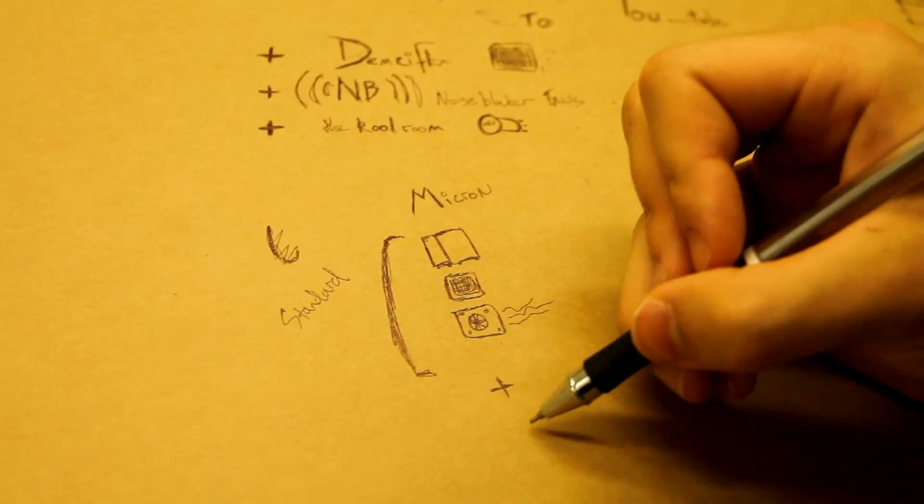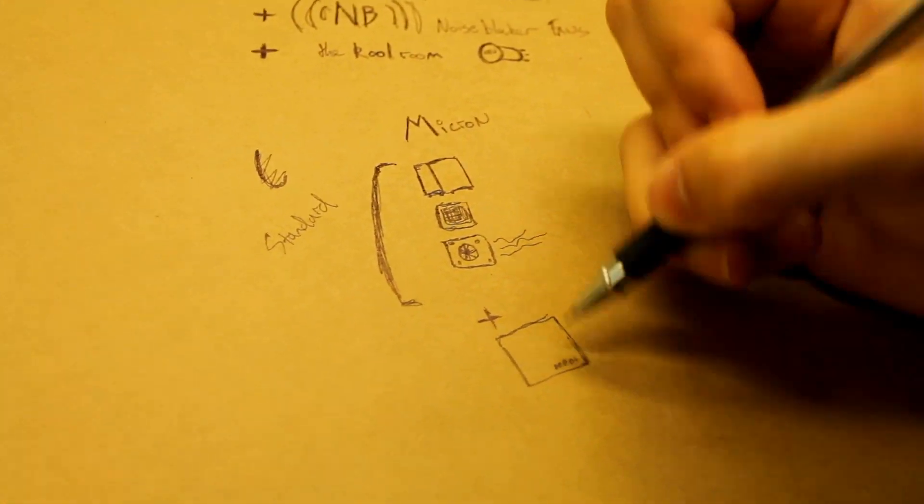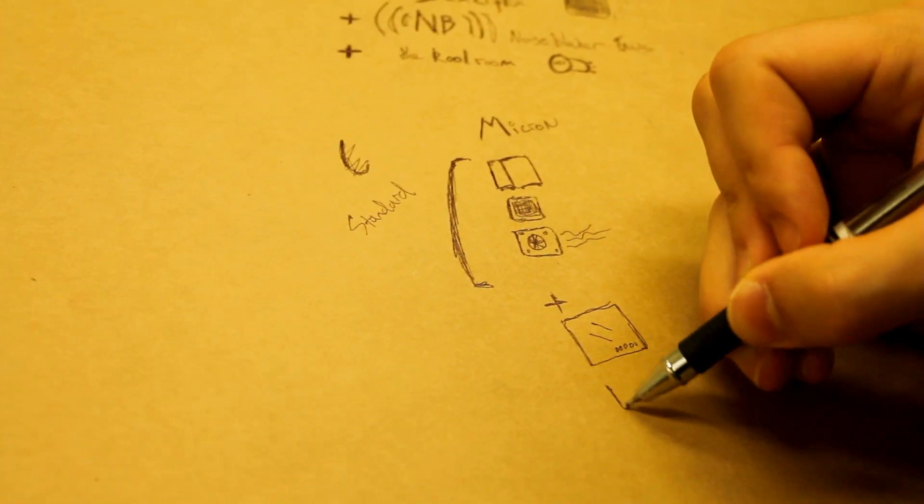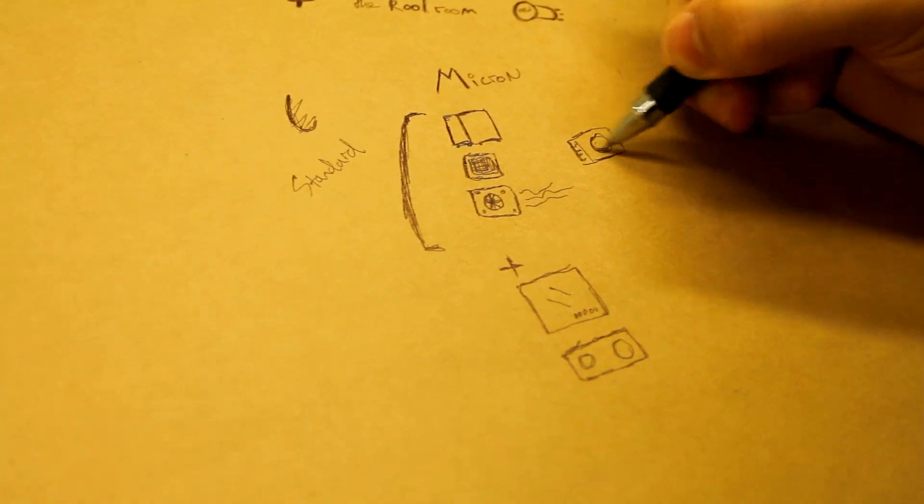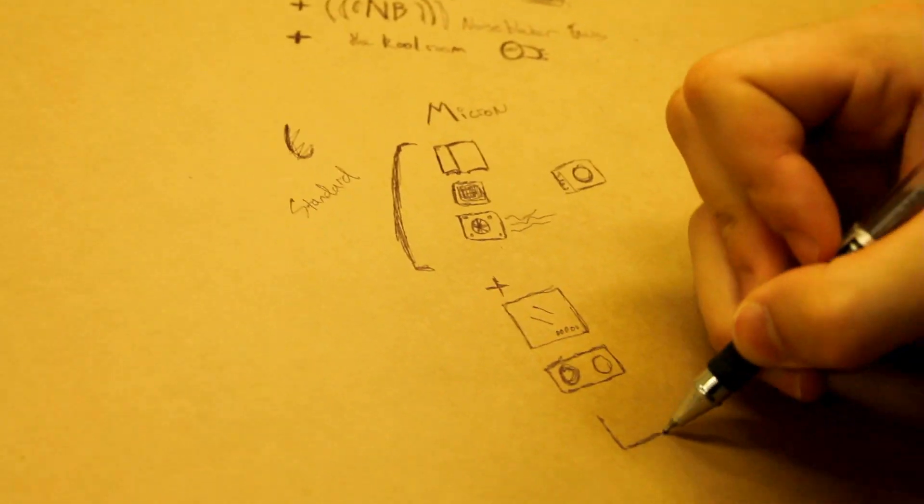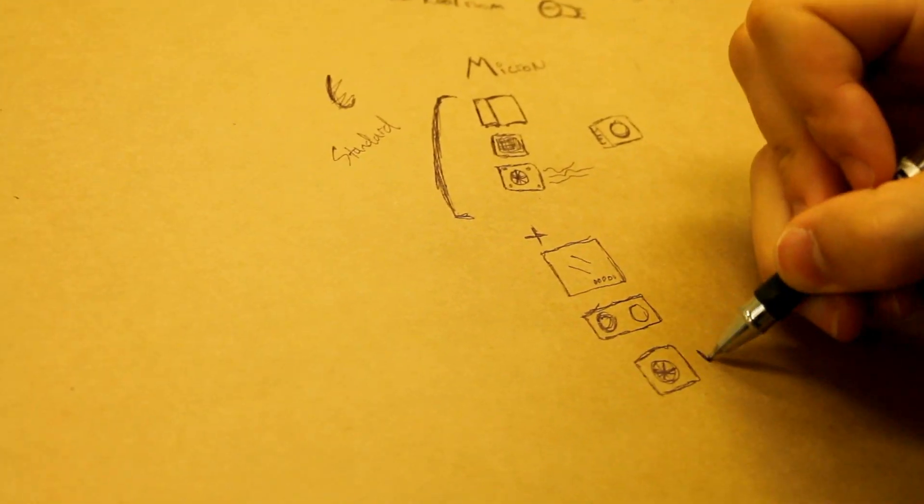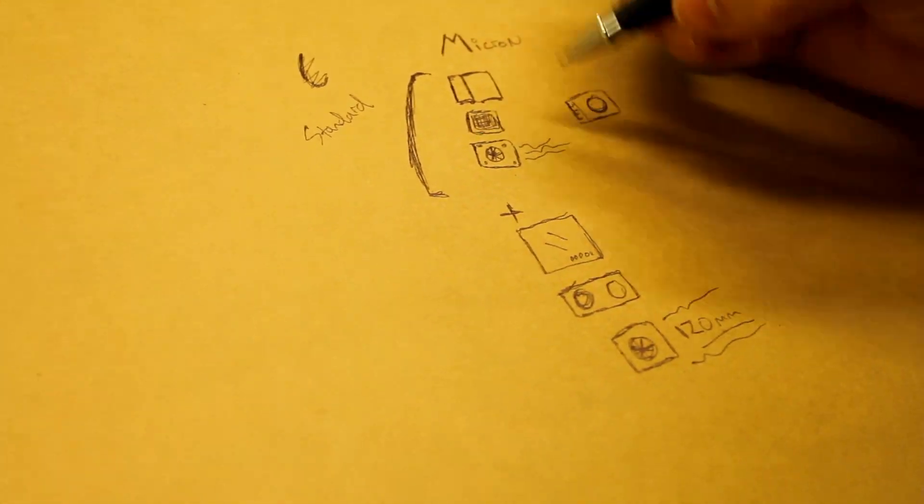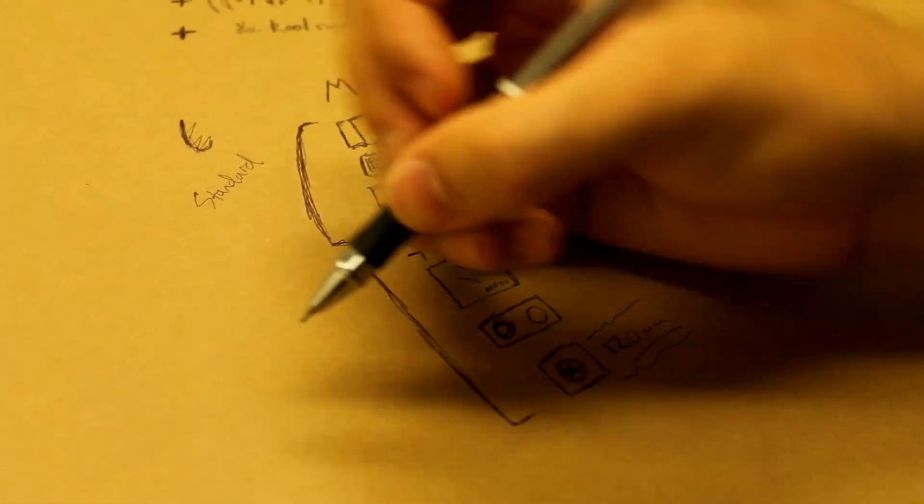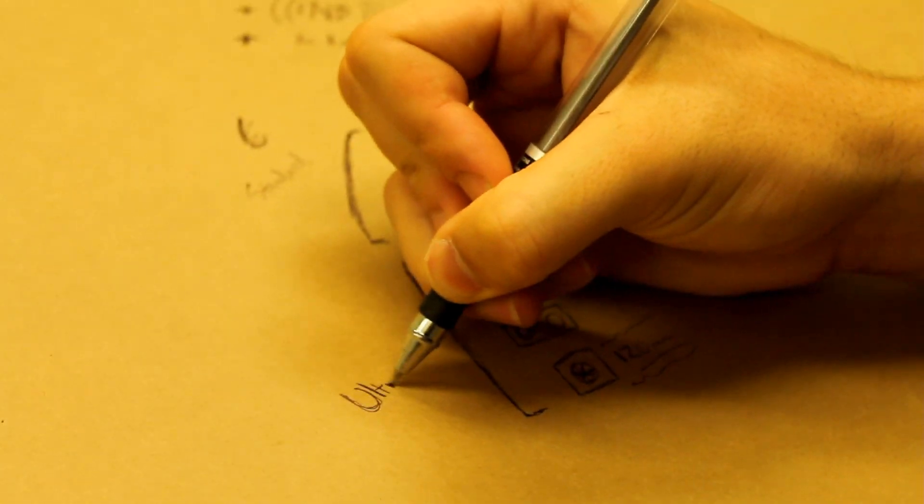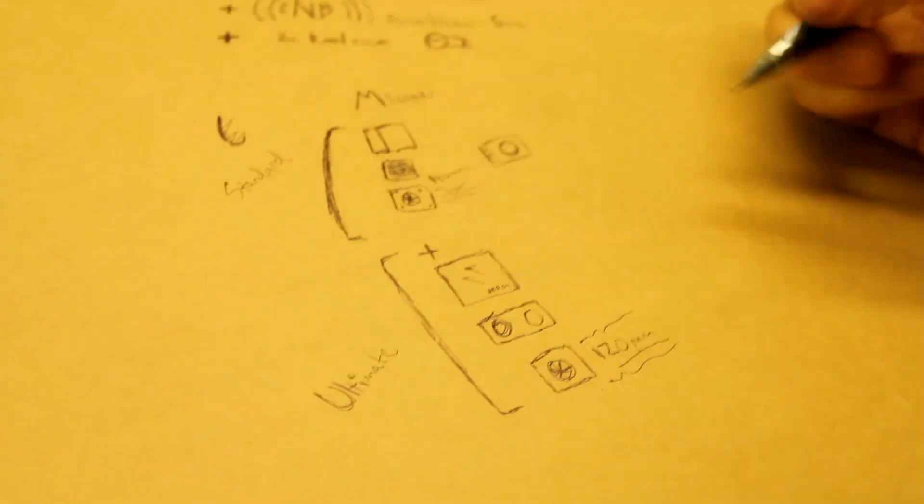The Ultimate features everything that the standard does, but with the addition of a clear side panel and the standard panel, and you also get a 120mm multi-frame Noise Blocker fan. We've thrown in a 240mm mount that can fit either a 240mm radiator or a Corsair H100 cooling system, and that's internally inside the case.